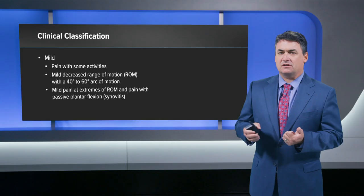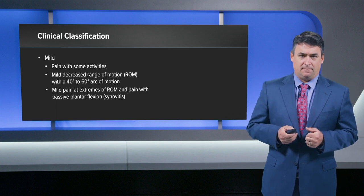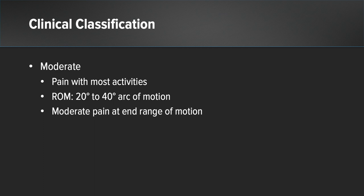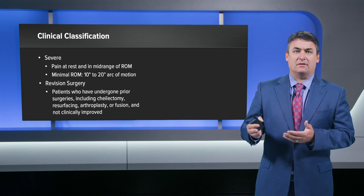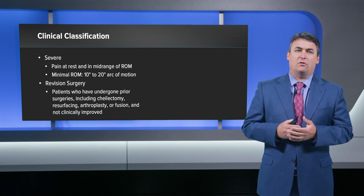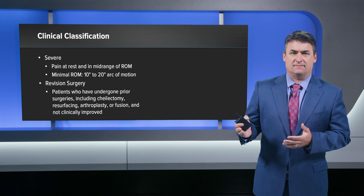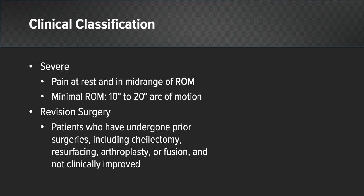Pain with passive plantar flexion is one of the early signs of Hallux Rigidus. In moderate disease, patients have pain with most activities, range of motion arc of about 20 to 40 degrees, and moderate pain at end ranges of motion. In severe disease, pain at rest is a hallmark, with pain in the mid-ranges of motion and minimal range of motion of 10 to 20 degrees. Revision surgery is a category for patients who have already had at least one prior surgery — chylectomy, resurfacing, arthroplasty, or a fusion that didn't heal — and haven't clinically improved.